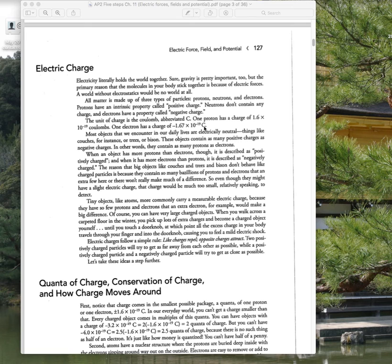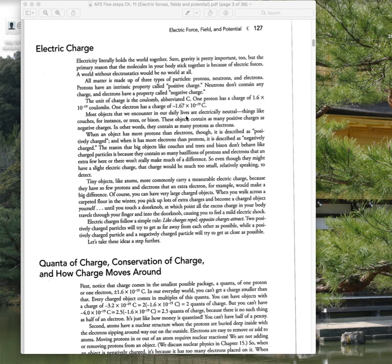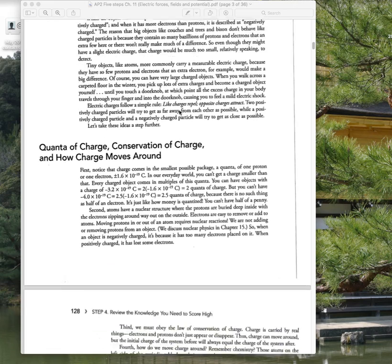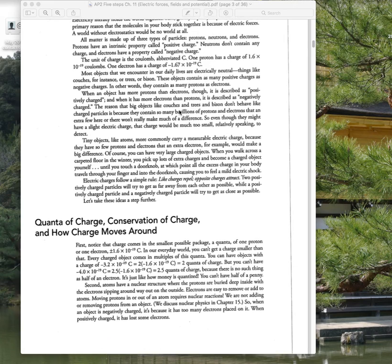You definitely should know the charge on a proton or electron. There is a typo in the notes — the charge on the electron is negative 1.6 times 10 to the negative 19th coulombs, not negative 1.67. I think they're confusing that with the mass of a proton, because those values are exactly the same.